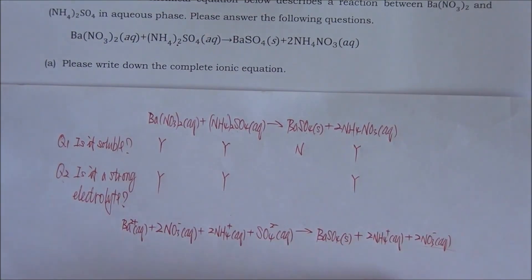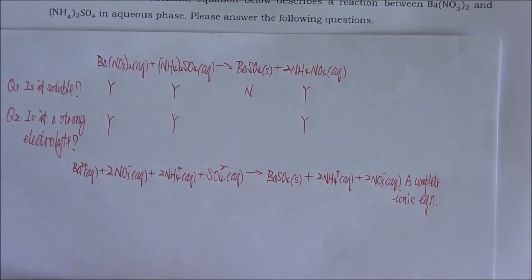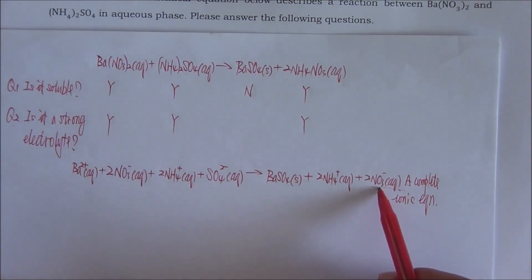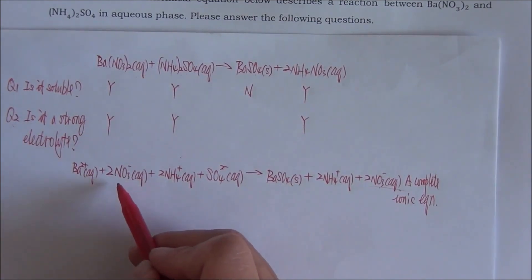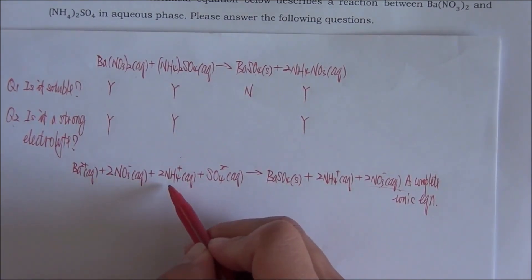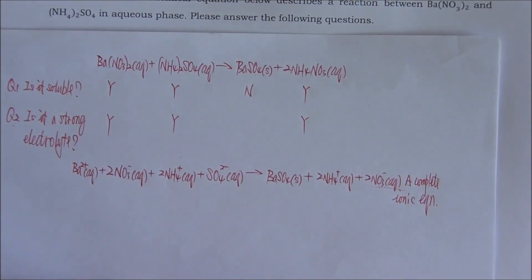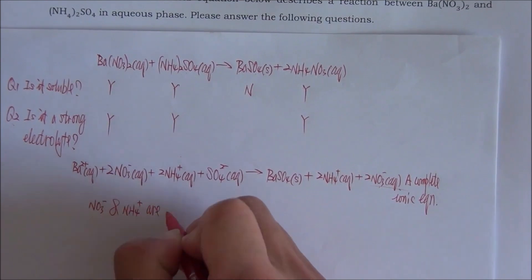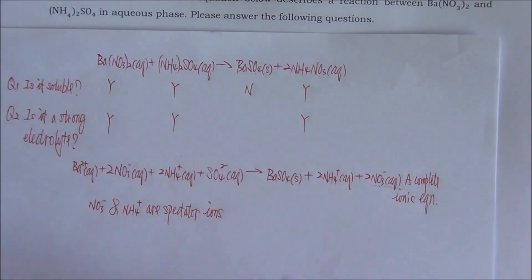This equation is now called the complete ionic equation. According to the definition of spectator ions, nitrate appears on both sides of the equation in exactly the same form — therefore, nitrate is a spectator ion. Ammonium ion also appears on both sides in exactly the same form — therefore, ammonium is also a spectator ion. If we remove the spectator ions from the complete ion equation, we get the net ion equation.